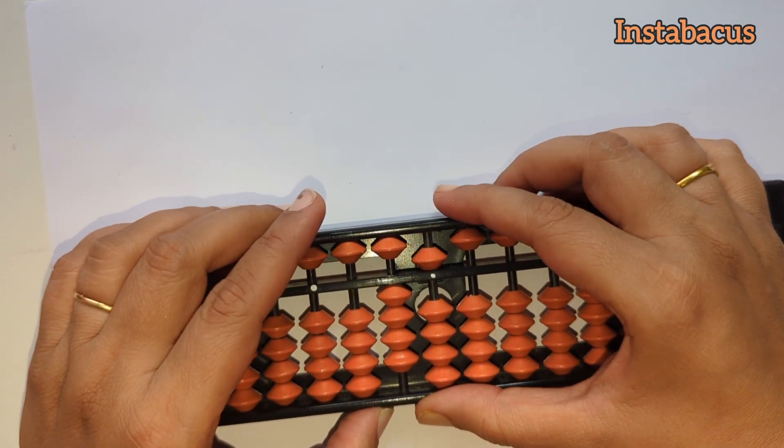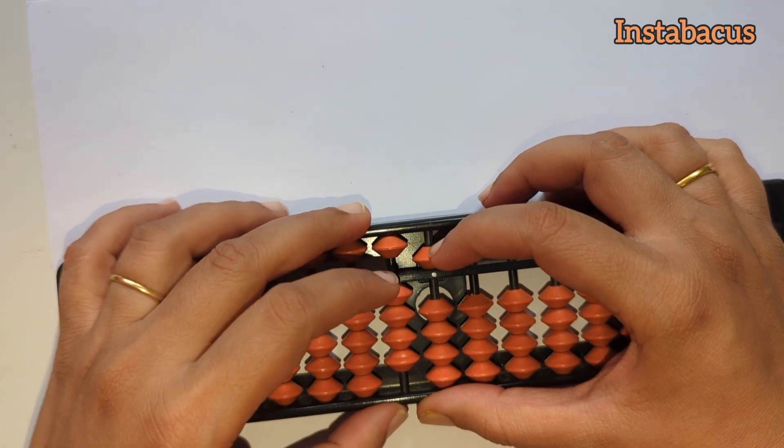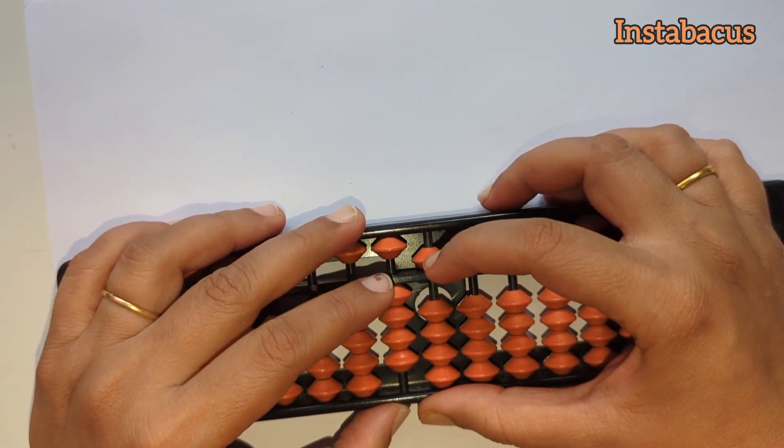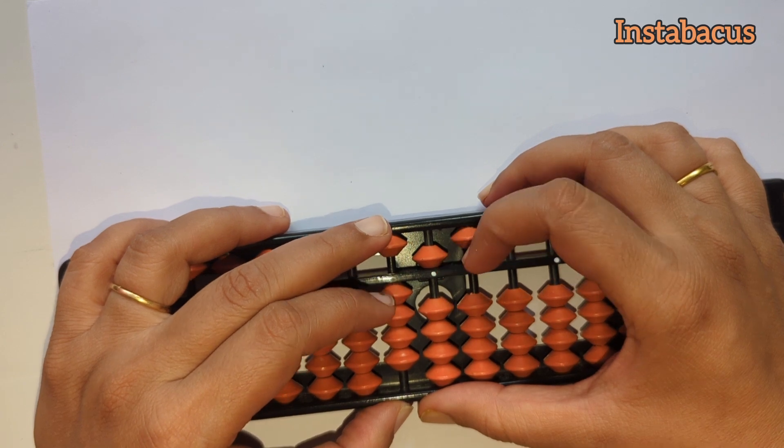And now plus five becomes forty-five. Now to make plus five here, what we are going to do is we are going to add five by adding ten over here with the method wherein we are going to add fifty and subtract forty simultaneously.